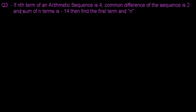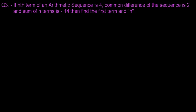This is another quite similar question that you generally see in your examination. Let me read it first and we'll discuss further. The question is: if the nth term of an arithmetic sequence is 4, the common difference is 2, and the sum of n terms is minus 14, then find the first term and n.